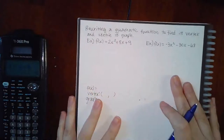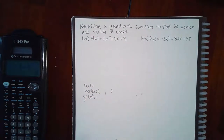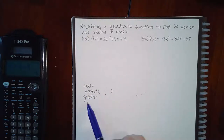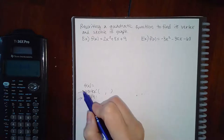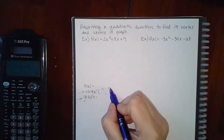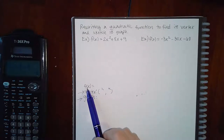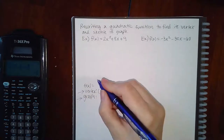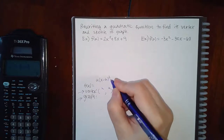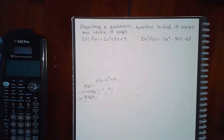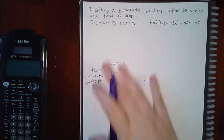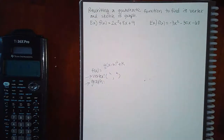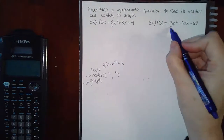The next section says 'rewrite the quadratic function to find its vertex and sketch the graph.' This is essentially what we've been doing — finding h and k — except now they also want the vertex form a(x - h)² + k written out explicitly. The a value is already visible in the original equation.